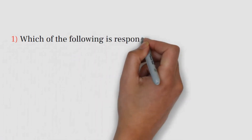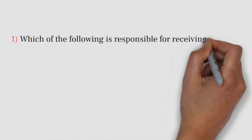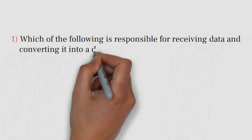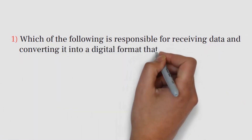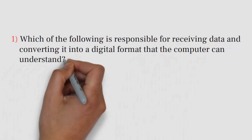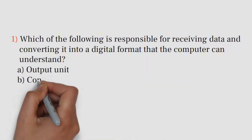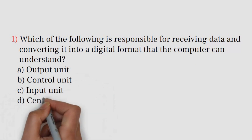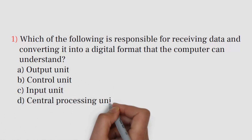Question number 1. Which of the following is responsible for receiving data and converting it into a digital format that the computer can understand? A. Output unit. B. Control unit. C. Input unit. D. Central processing unit.